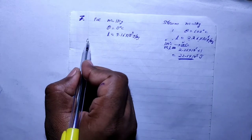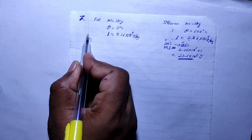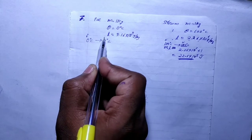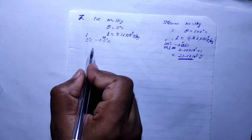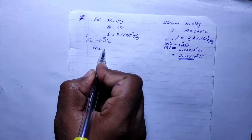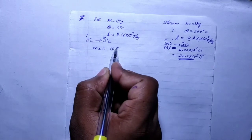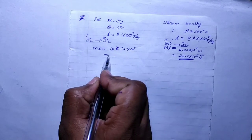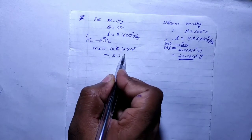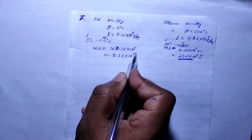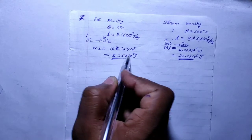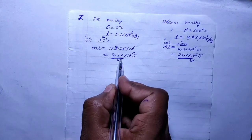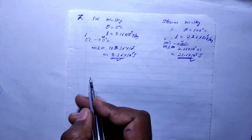Now for the ice at 0 degrees converting to water at 0 degrees: the energy required is m into L, which is 1 into 3.36 into 10^5. Comparing: the steam releases 22.6 into 10^5 J and melting ice requires 3.36 into 10^5 J.